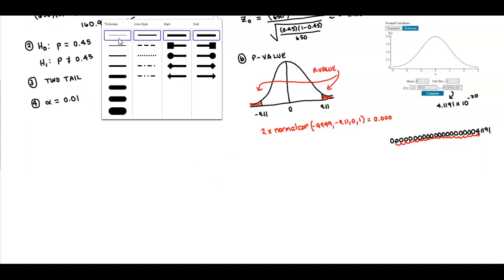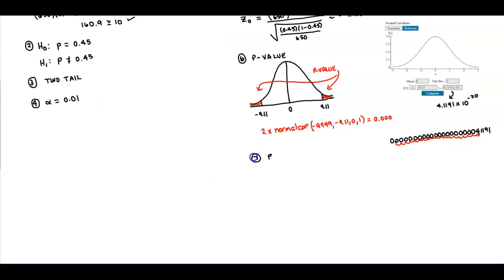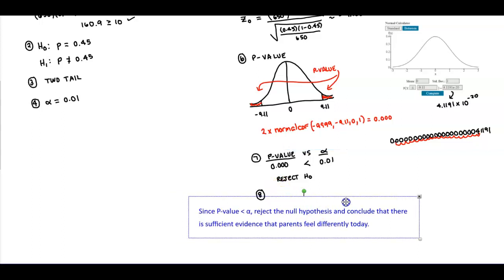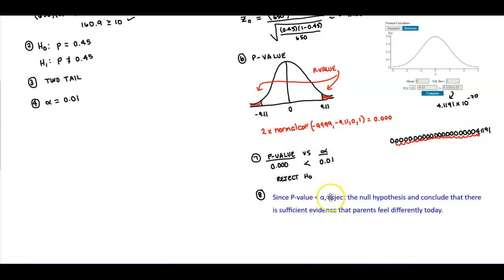In step 7, we compare our p-value versus alpha. Our p-value is 0.000 and our alpha is 0.01. Since p-value is less than alpha, we reject the null hypothesis. Our conclusion: since the p-value is less than alpha, we reject the null hypothesis and conclude that there is sufficient evidence that parents feel differently today than they did 20 years ago.